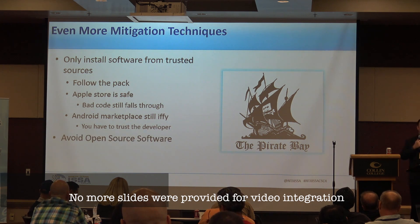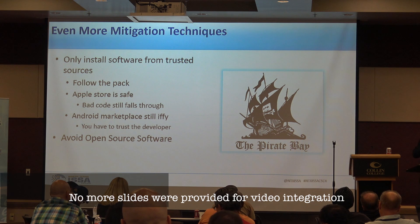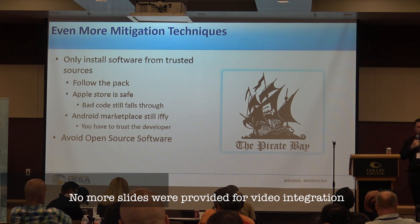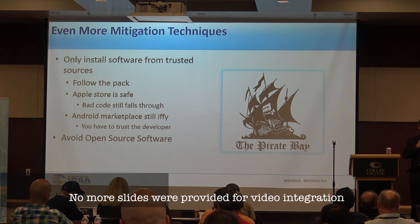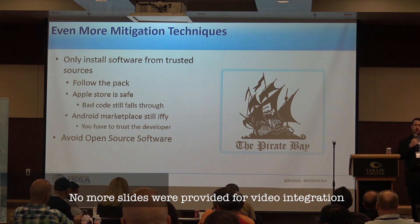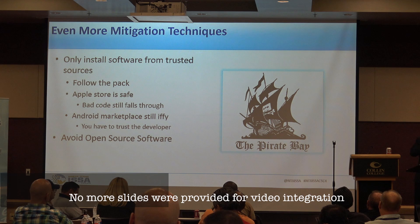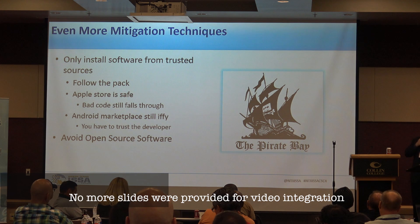This is a bit controversial — because of the issues with Transmission and OS X KeyRanger, the federal government is requesting, in the FFIEC report, that banks avoid open source software, and they're penalizing organizations for the amount of open source software they have. I'm a hacker — I love my open source. What I would recommend is validate your hashes, but not necessarily from the same source you download from. Go to a different website and validate your hashes, because the chances of both those sites being hacked is probably not going to happen.